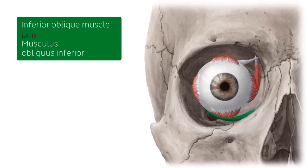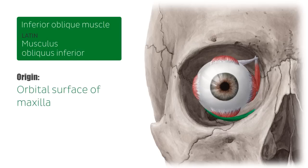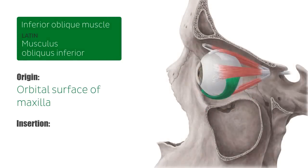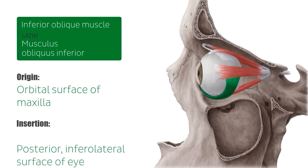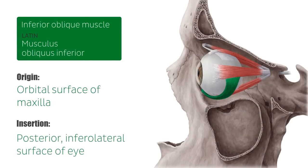The inferior oblique muscle originates from the orbital surface of the maxilla just lateral to the nasolacrimal groove. It is important to note that this is the only extraocular muscle that does not originate from the common tendinous ring, also known as the annulus of Zinn. The inferior oblique muscle inserts onto the posterior inferolateral surface of the eye, just inferior to the insertion of the superior oblique muscle.